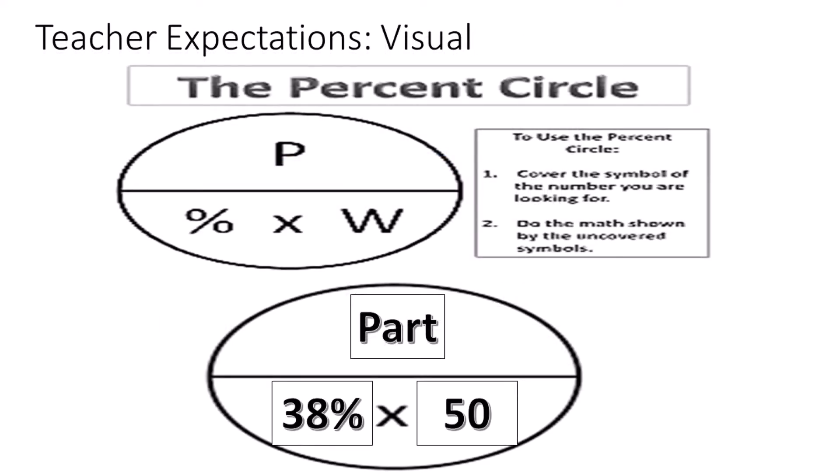Now let's plug in our information into the model to see what operation is easiest to solve this problem. It shows us that when we're looking for our part and we're given a percent and a whole, we can multiply the percent by the whole.